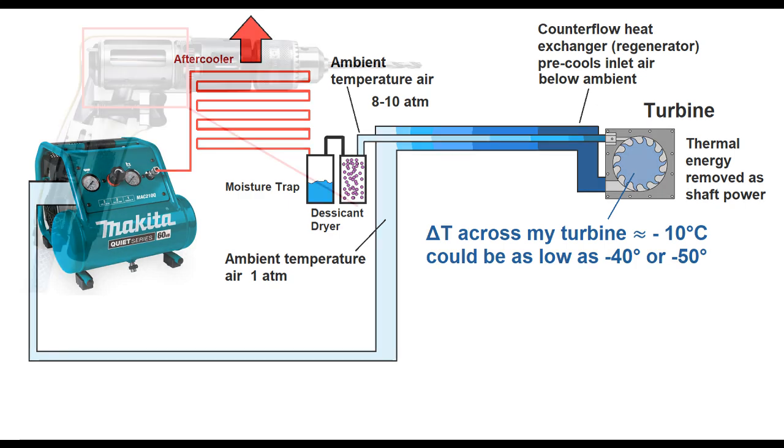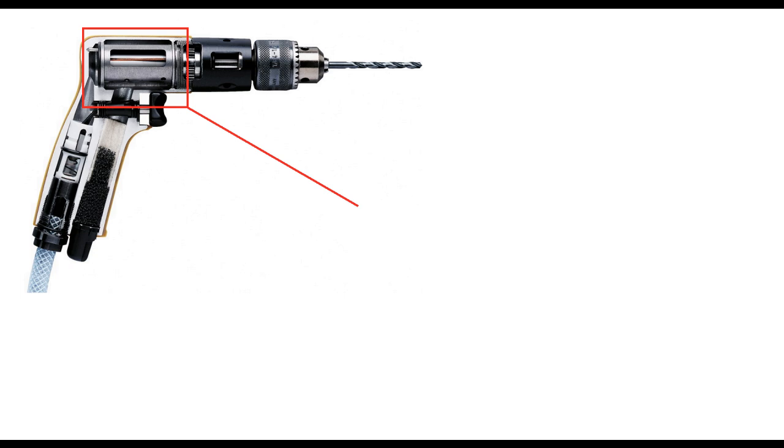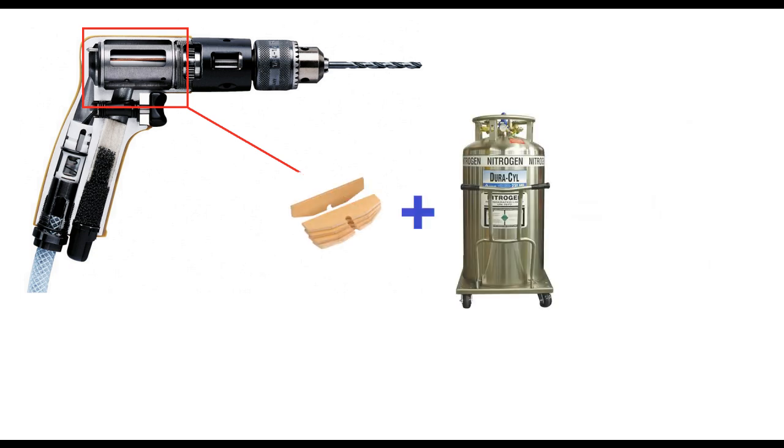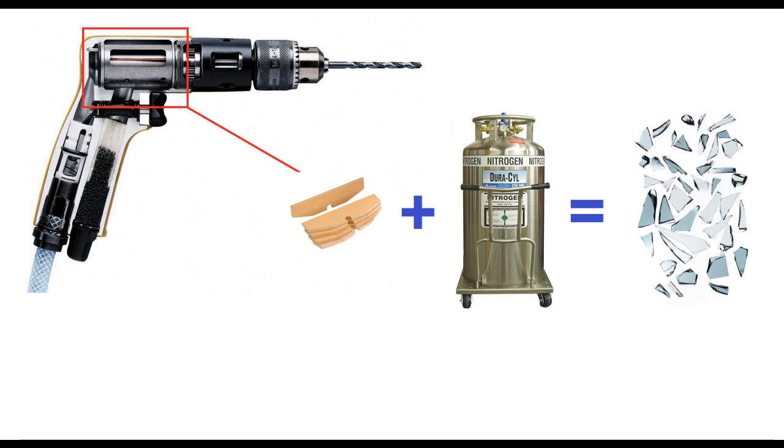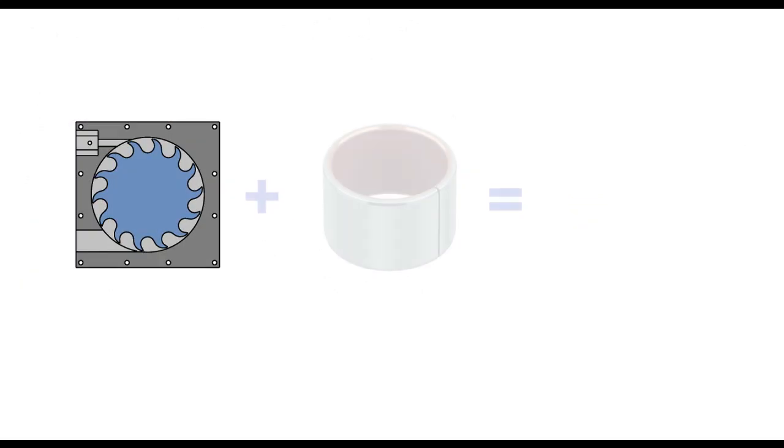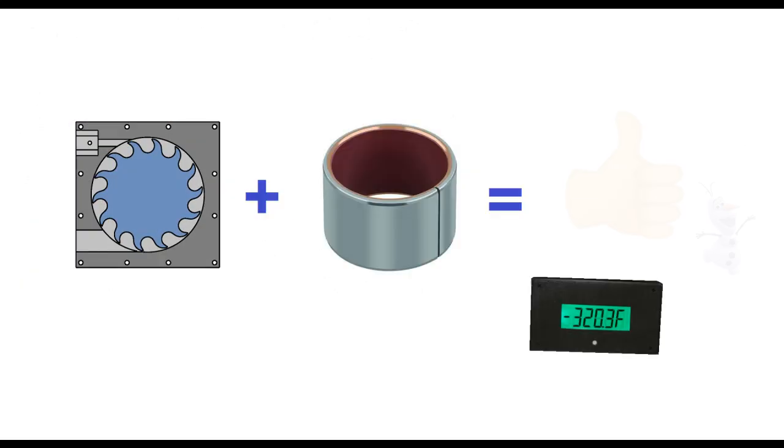The reason I can't use a typical pneumatic drill rotor for the turbine is because the sliding vanes would crack and snap off at cryogenic temperatures, but in theory, a turbine running on dry bearings should be able to stand up to the cold, even if it's made out of PLA.